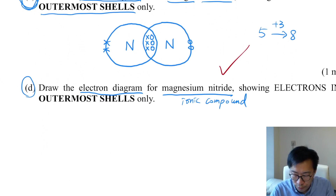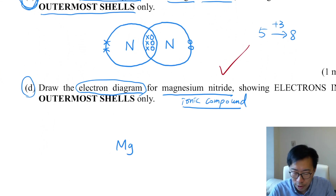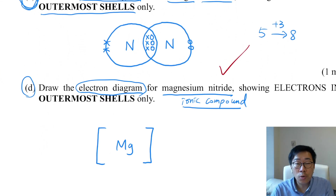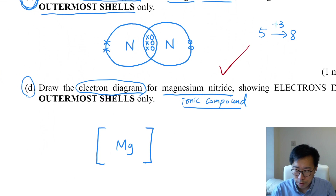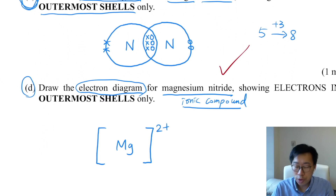For an ionic compound, if you are asked to draw the electron diagram, you draw the cation on the left — Mg. Since Mg is a cation, it is a metal ion. From atom to ion, the process is losing electrons — the outermost shell electrons of the Mg atom are lost. The magnesium atom loses two electrons, so we draw Mg2+.